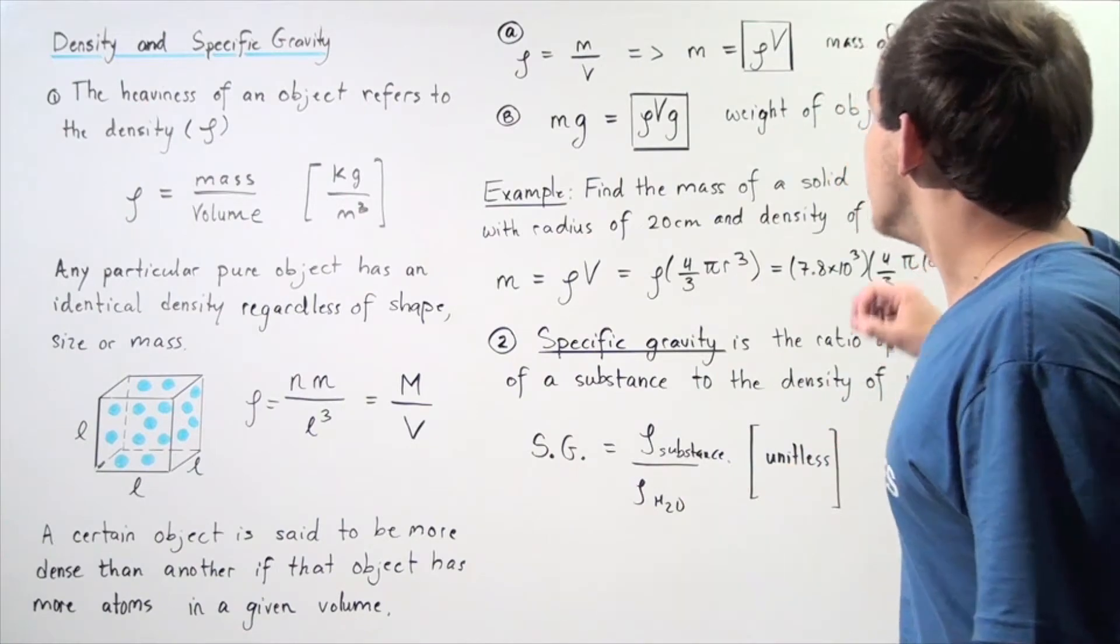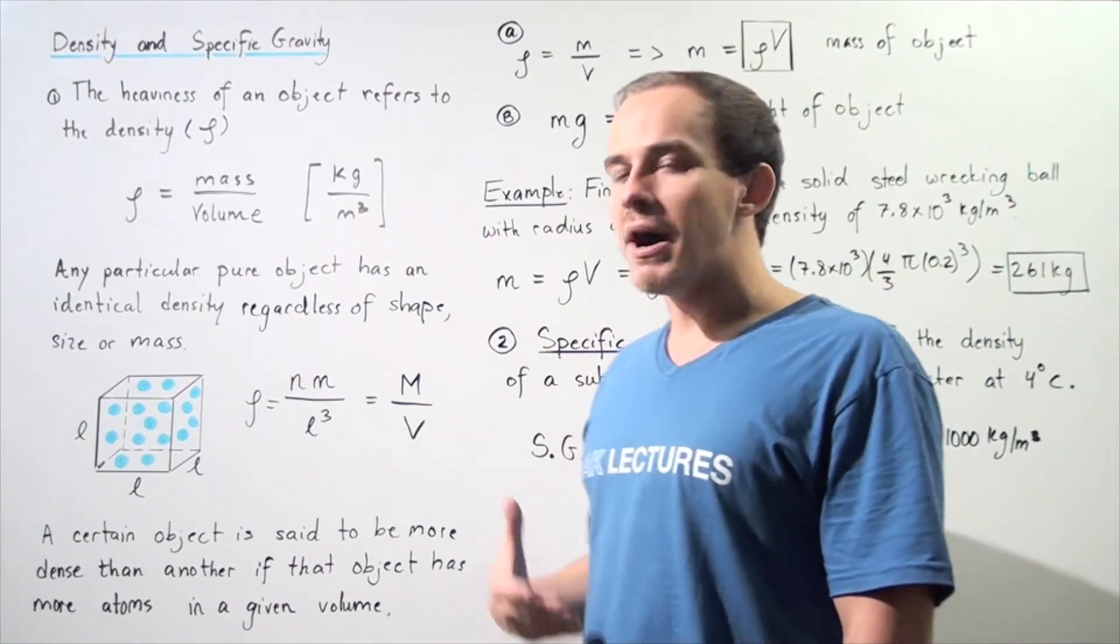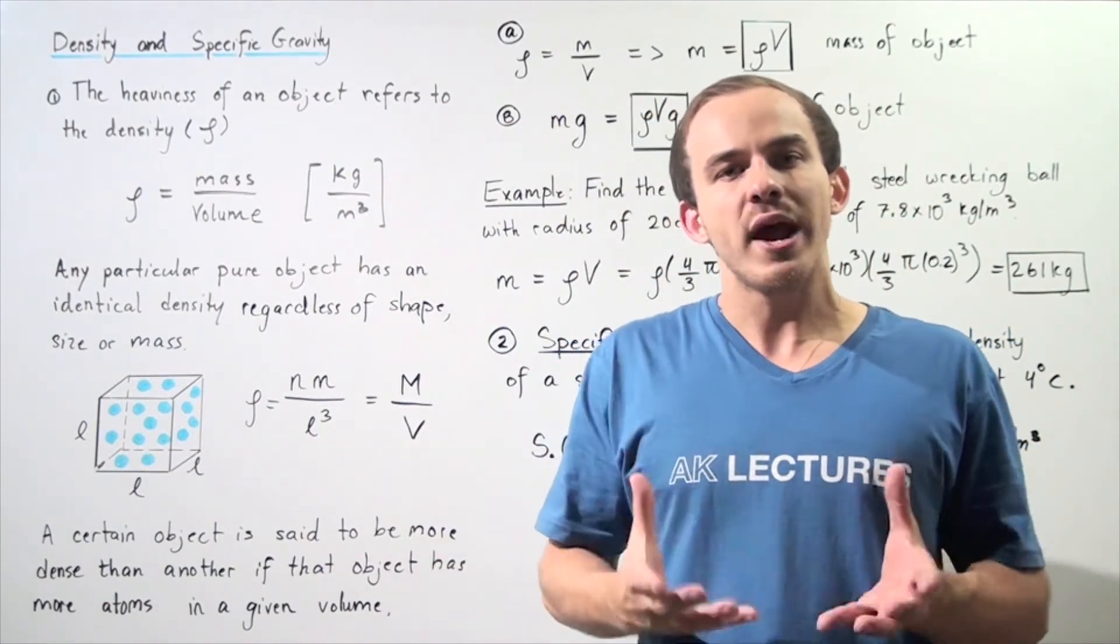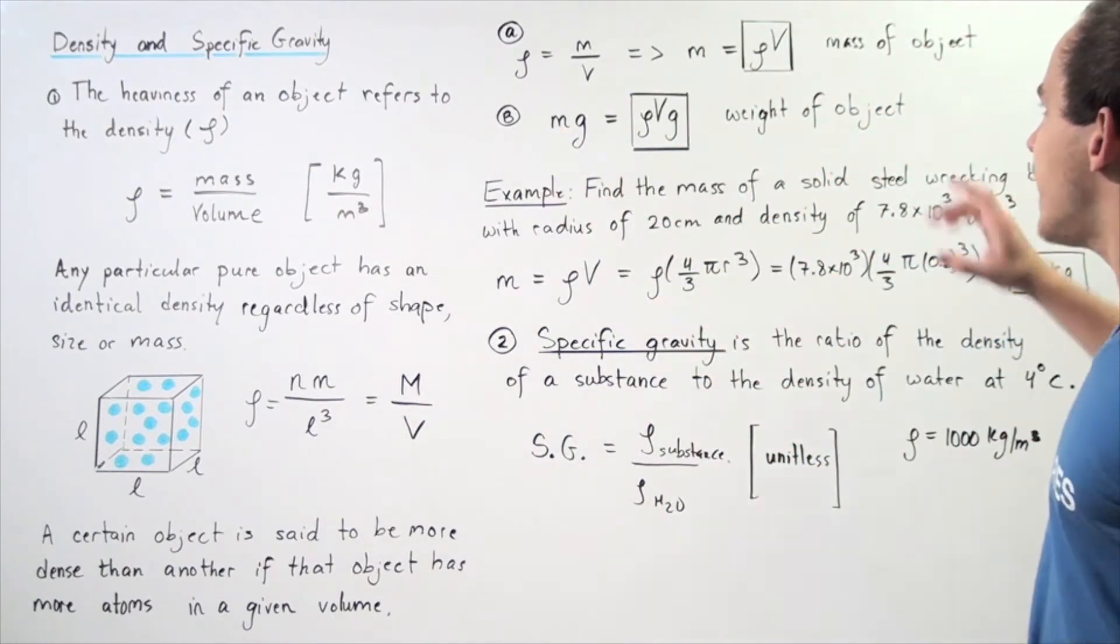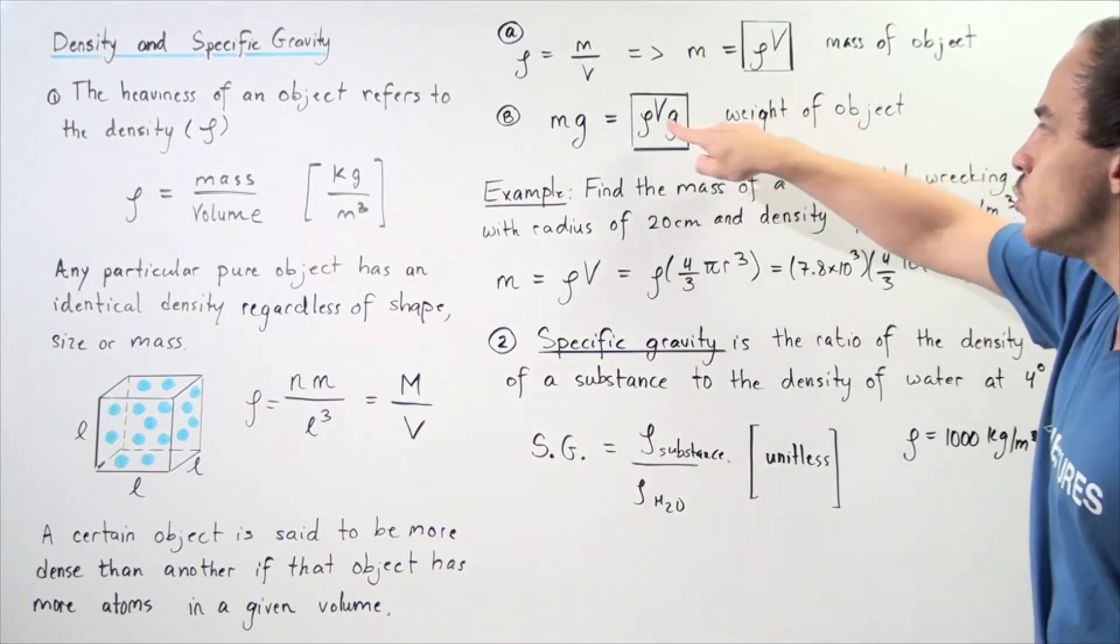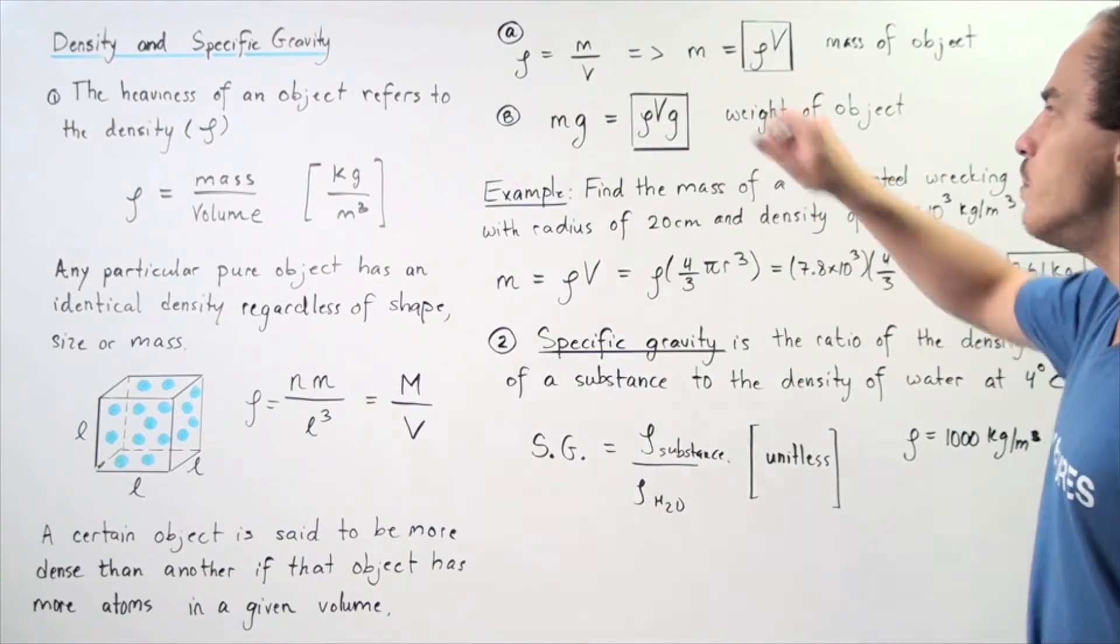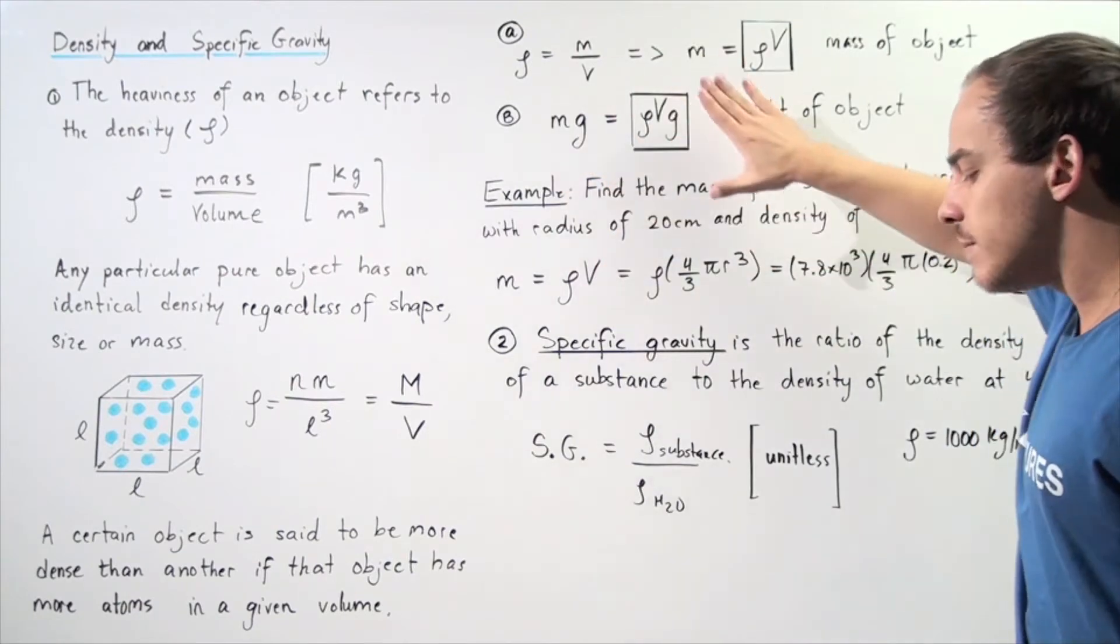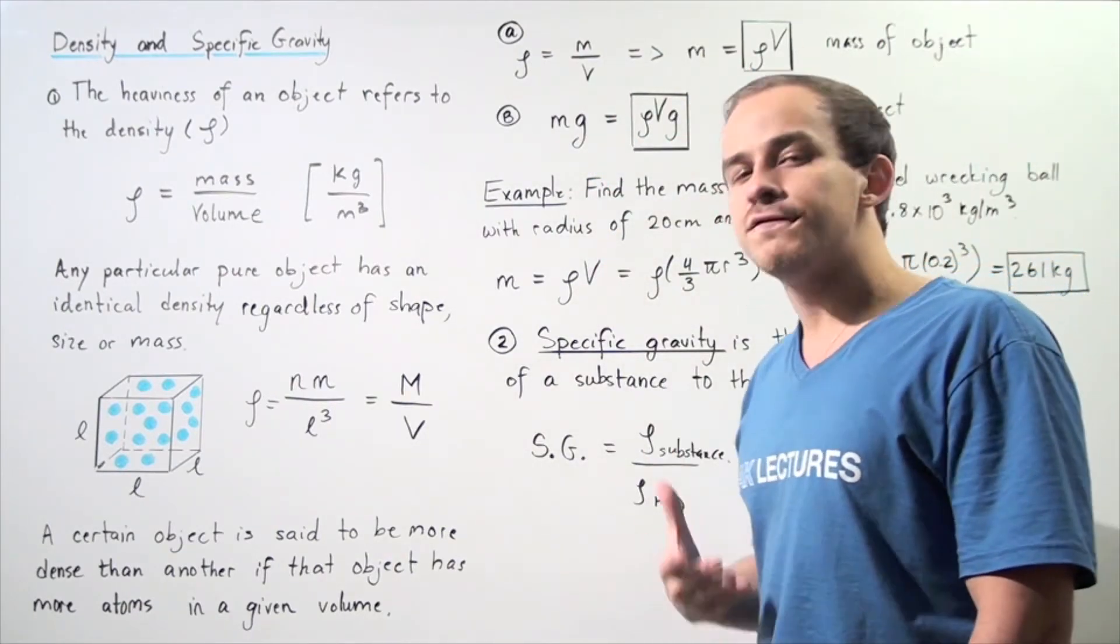In part B, let's suppose we take the mass of the object and multiply it by G. The mass times the gravitational constant G is the weight of the object. So the weight equals the density multiplied by the volume multiplied by the gravitational constant G. This equation is useful when considering fluids.